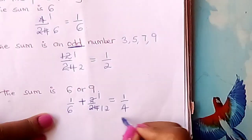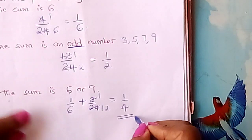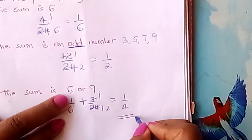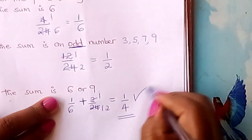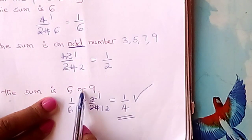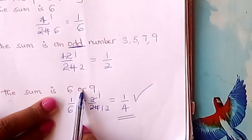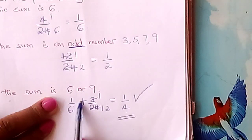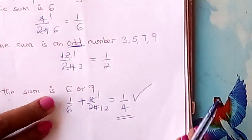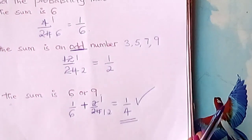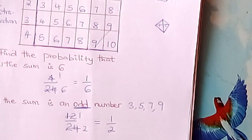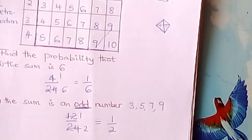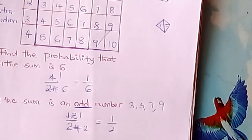So the probability that the sum is either six or nine is a quarter. Go and practice on such problems. God bless you.